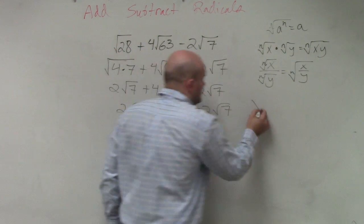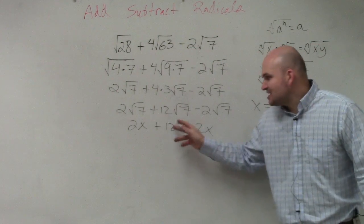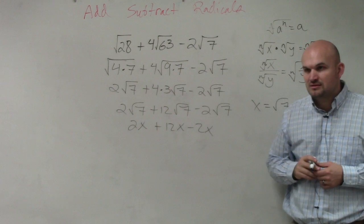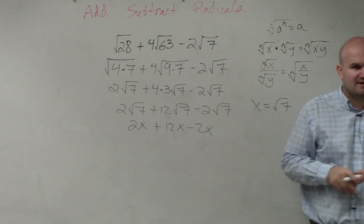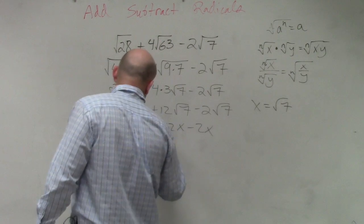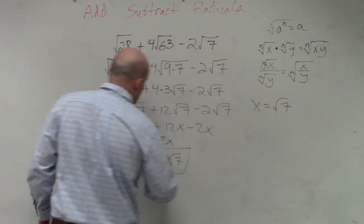Just say x is equal to the square root of 7. Don't let yourself get confused. What's 2x plus 12x minus 2x? 12x. So then, what's 2 square root of 7 plus 12 square root of 7 minus 2 square root of 7?